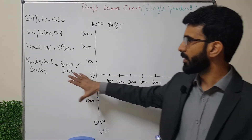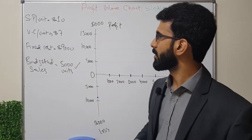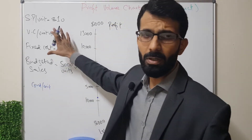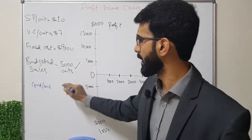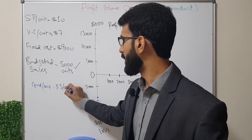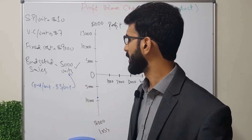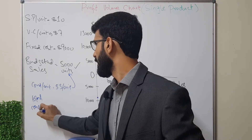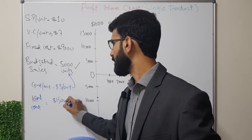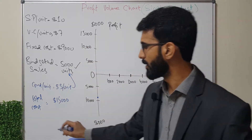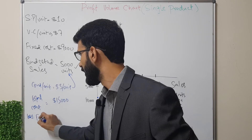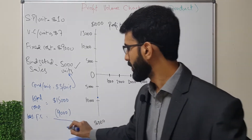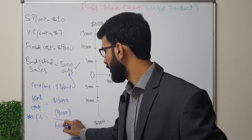The contribution per unit is $3 — the difference between selling price and variable cost. If we end up selling 5,000 units, the total contribution will be $15,000. Because we have a fixed cost of $9,000, subtracting that from the contribution gives us our profit.